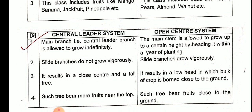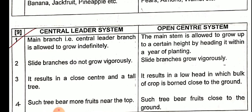First point: in the central leader system, the main branch — that is the central leader branch — is allowed to grow indefinitely. The main stem is allowed to grow without restriction; we do not cut it in any way. But in the open center system, the main stem is allowed to grow only up to a certain height, by heading it back within a year of planting.